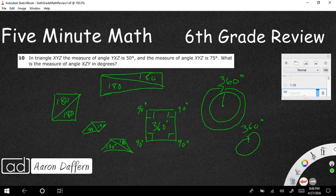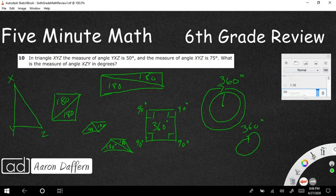Triangle XYZ. So I'm going to draw that right here. We're going to say XYZ. With the measure of angle YXZ. When you have the three letters, it's that center letter that's going to be your vertex. So YXZ means when I'm going from Y to X to Z, it's this X I'm looking at. That's going to be 50. So we're going to call this 50 degrees.